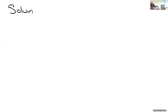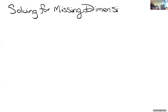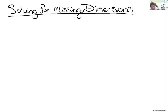Welcome to virtual GED class. We are talking about solving for missing dimensions algebraically — meaning using the GED formula sheet. We've seen the GED formula sheet a lot in the last few weeks. We've used it to solve for perimeter, area, surface area, and volume.